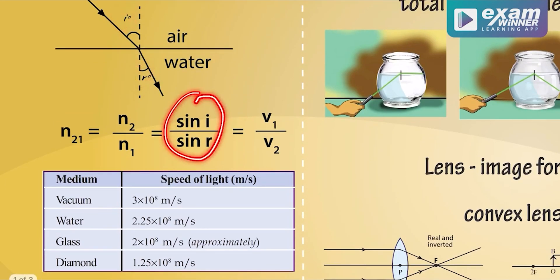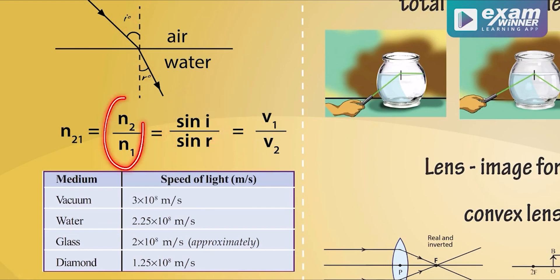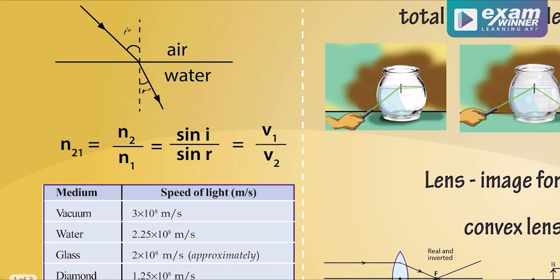The formula is: sin of i divided by sin of r is equal to n2 by n1, where n2 is the refractive index of the second medium and n1 is the refractive index of the first medium.